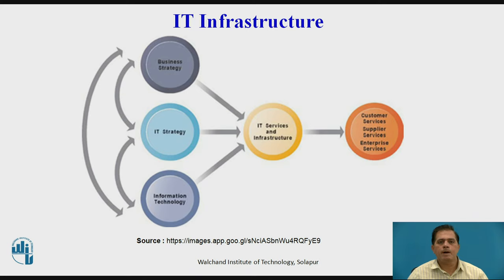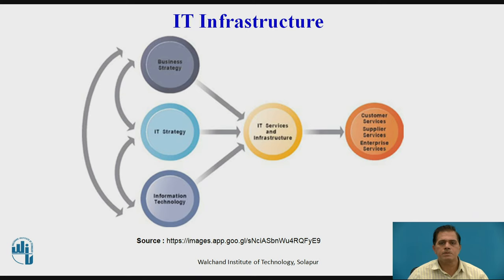This diagram of IT infrastructure defines all IT services and infrastructure composed of IT strategy, business strategy, and information technology. These factors interface with each other across enterprises and different types of businesses. The people involved include customer services, supply services, and knowledge enterprises — three factors that are centrally involved in IT infrastructures and very important for enterprises to run their business smoothly.